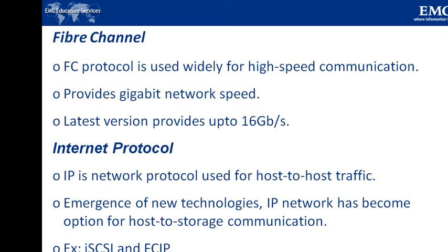The next protocol is Fibre Channel. Fibre Channel is a widely used protocol for high-speed communication to storage devices. The Fibre Channel interface provides gigabyte network speed. It provides serial data transmission that operates over copper wire and optical fiber. The latest version, 16 FC, allows data transmission up to 16 GB per second. The FC protocol and its features will be covered in more detail in upcoming chapters.